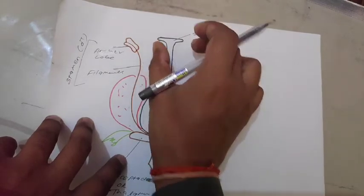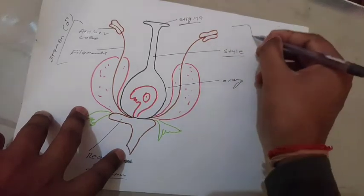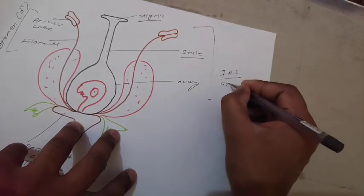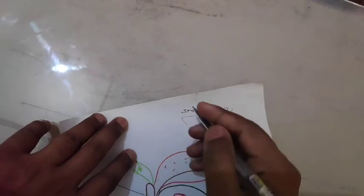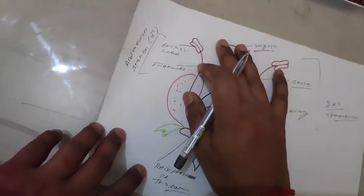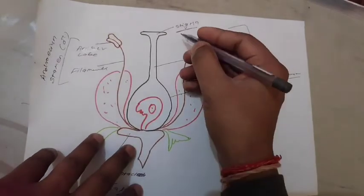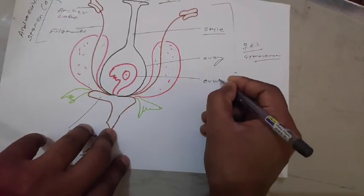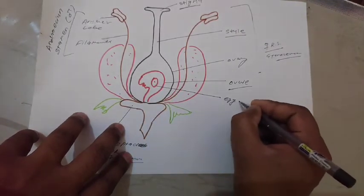Stigma and style are the typical parts of the female reproductive system and help for the carrying and growth of the pollen grains at the time of pollination. Just after the style, there is the swelling part — the ovary. The stigma, style, and ovary form the female reproductive system, also known as the gynoecium. The male reproductive system is also known as the androecium. The other name for stigma, style, and ovary collectively is also known as the carpel.